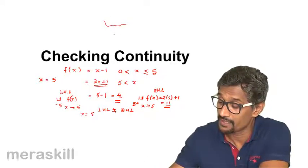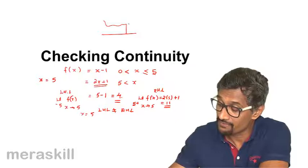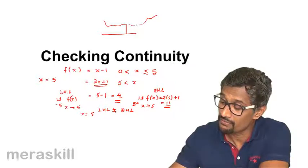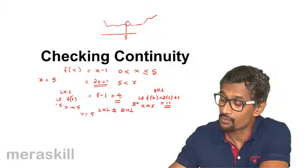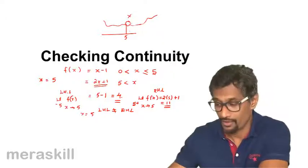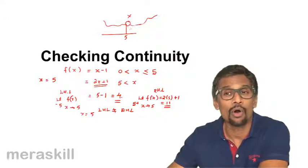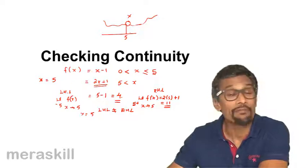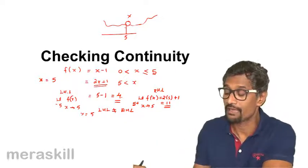So the graph could be somewhat like this. When x is 5, there is a break over here and then the graph proceeds further. So that means somewhere over here there is no logical or determinate value of f(x) when x is equal to 5.